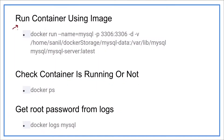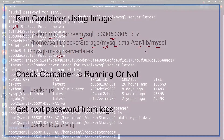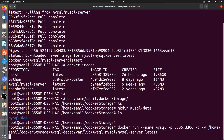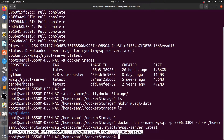The next step is to run the container using the image. For running the container, we are using the docker run command, providing the name of the container, binding the port, providing the name of the image and binding the directory. Here we have given our local system path docker-storage/mysql-data on which we want to put all the files, which will be available inside the container on path /var/lib/mysql. Let's paste the command and hit enter. The command is executed.